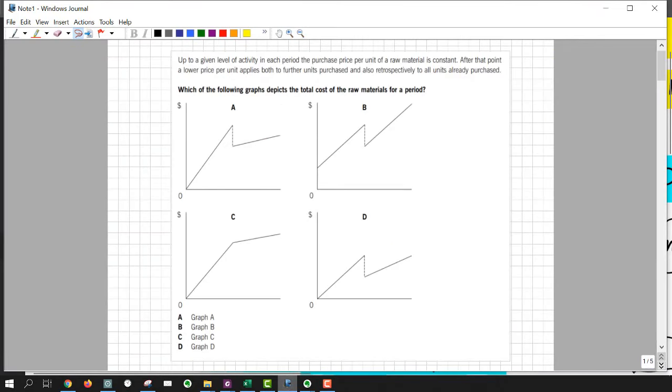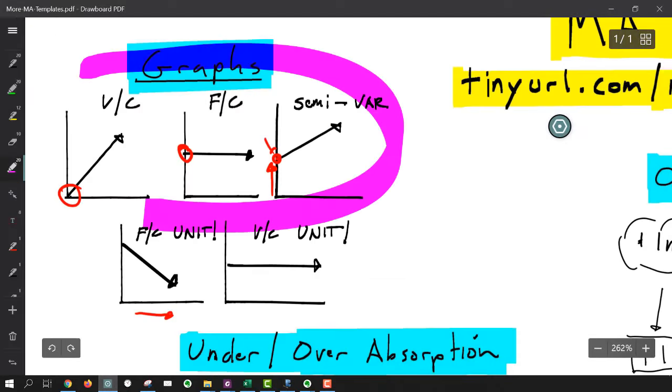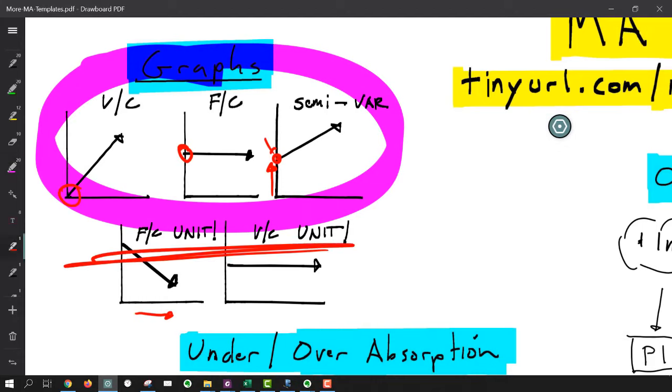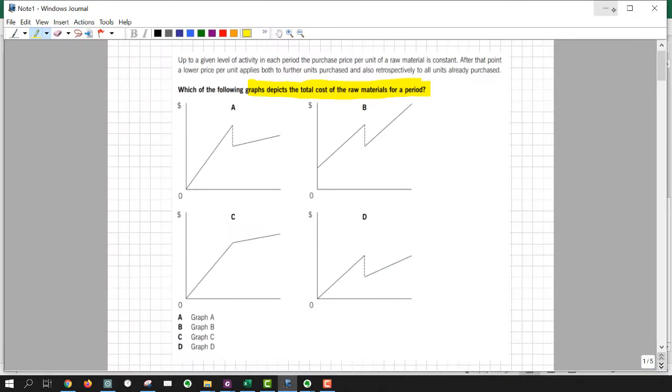Let's jump back at this question now. So what I want you to do first, you always read this requirement and you have to identify what type of cost are we talking about. The graph depicts the total cost of raw materials, not the unit cost, total cost. So we are working off of these, not this one. This is total. That's the unit level cost below. Those are the total costs above. Now, let's read the little story. Up to a given activity level in each period, the purchase price of a unit of raw material is constant. After that point, a lower per unit price applies to the units purchased and retrospectively. Pause the video. Try this on your own.